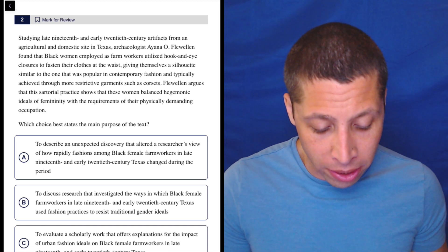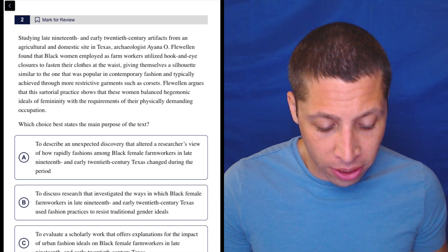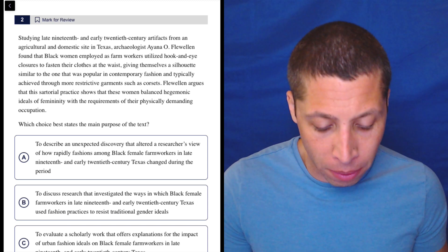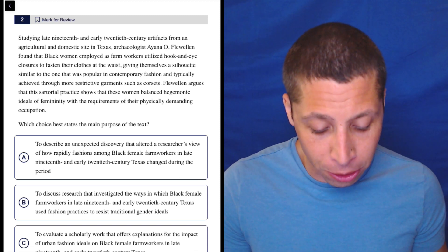Studying late 19th and early 20th century artifacts from an agriculture and domestic site in Texas, archaeologist Diana O. Flewellen found that black women employed as farm workers utilized hook and eye closures to fashion their clothes at the waist,